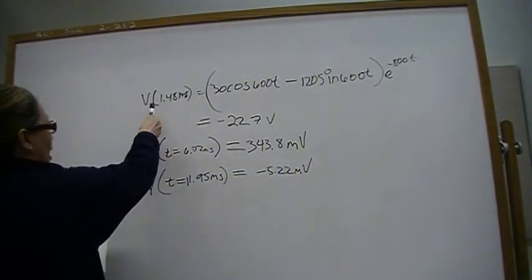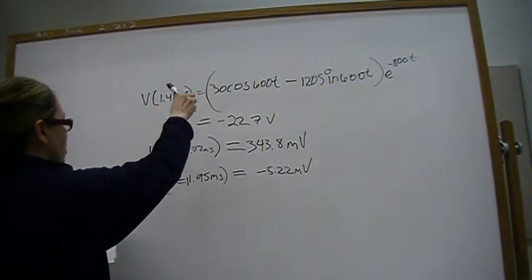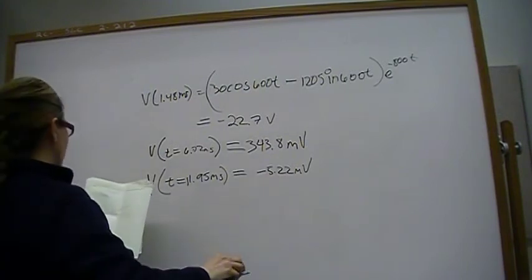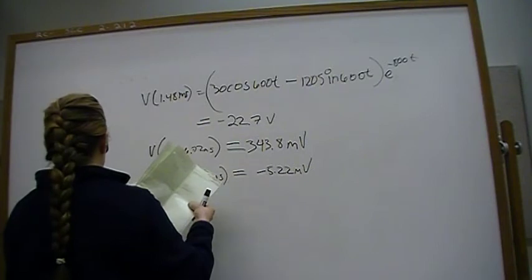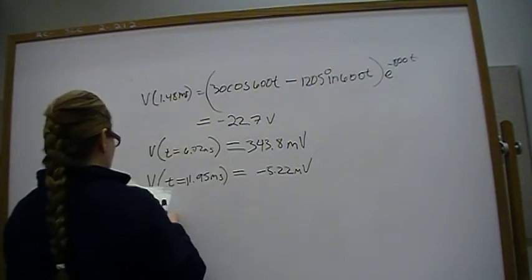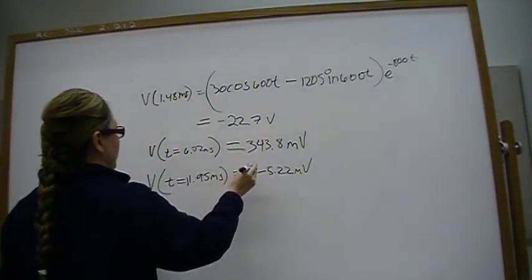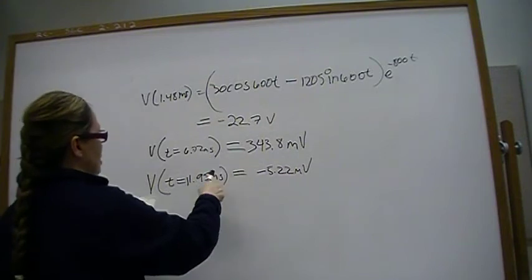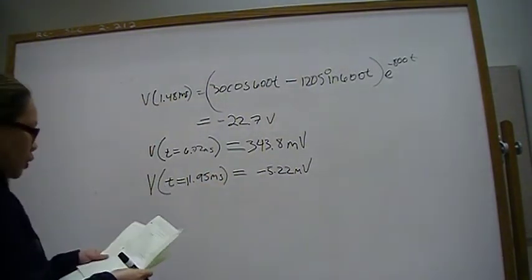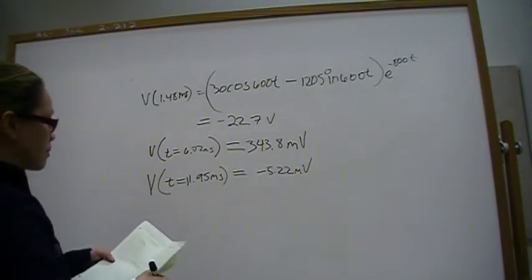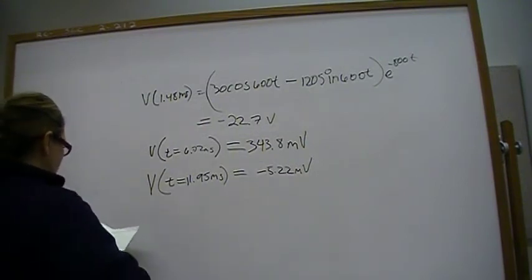Okay, so at 1.48 milliseconds, we're below. We've dropped below the 0 volts into the negative territory. And slightly above in the positive territory for time 6.72 milliseconds. And then down to negative 5.22 for time is equal to 11 milliseconds.